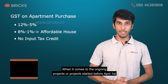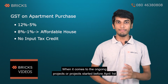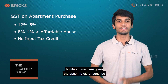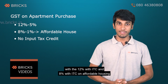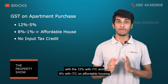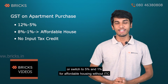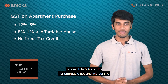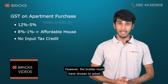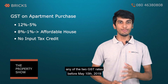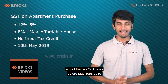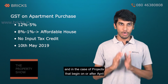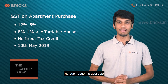When it comes to ongoing projects or projects started before April 1st 2019, builders have been given the option to either continue with 12% with ITC and 8% with ITC on affordable housing, or switch to 5% and 1% on affordable housing without ITC. However, the builder must have chosen to adopt any of the two GST rates before May 10th 2019, and in the case of projects that begin on or after April 1st 2019, no such option is available.